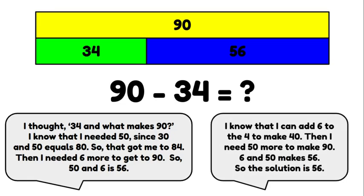Here's another one. I know that I can add 6 to the 4 to make 40. Then I need 50 more to make 90. 6 and 50 makes 56. So the solution is 56.